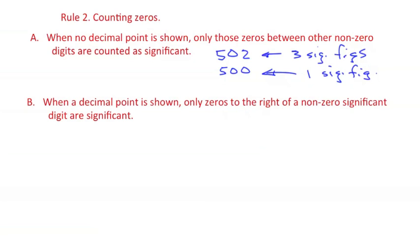So when a decimal point is shown, zeros to the right of a non-zero significant digit are significant. For example, if I have 532.0, this is to the right of a non-zero significant digit. So the zero does count. Here I'm implying four significant figures.